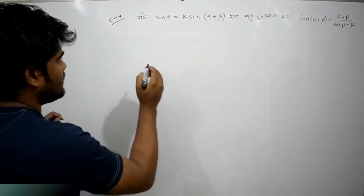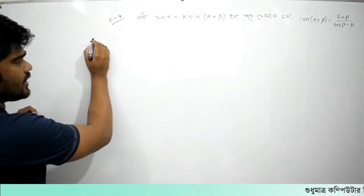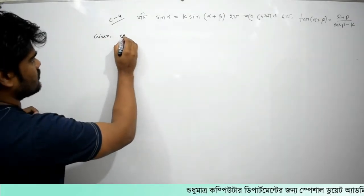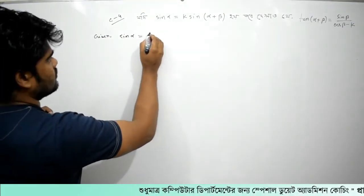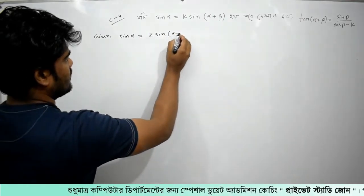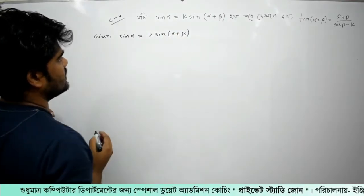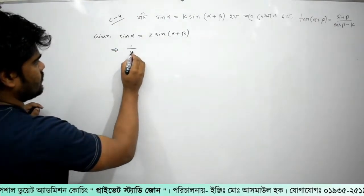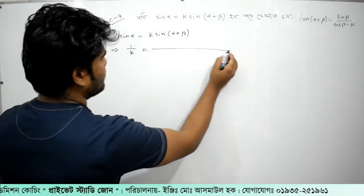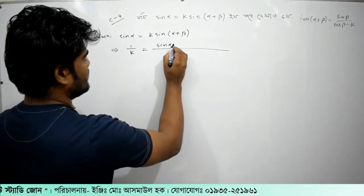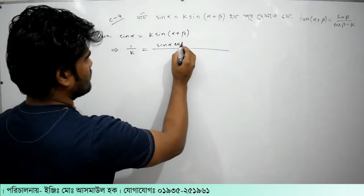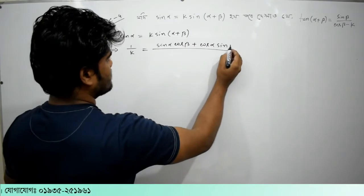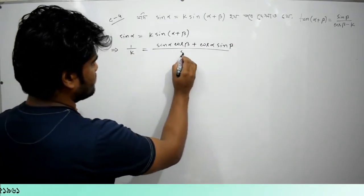Let's make each given a new one. We have to find it. Given: sin alpha equals k sin(alpha plus beta). This is the calculation of k, and this is the sine of beta. Sin alpha equals cos beta plus cos alpha sin beta.